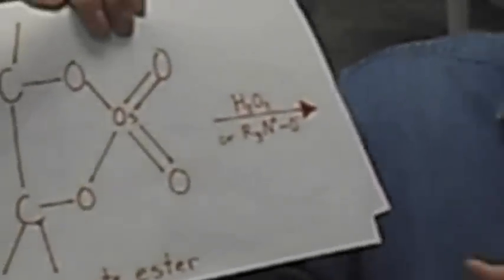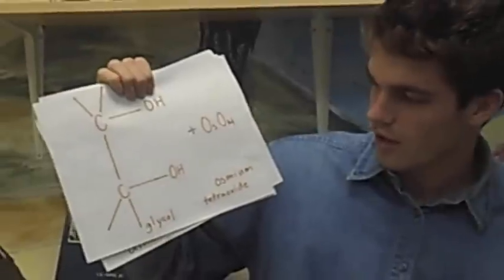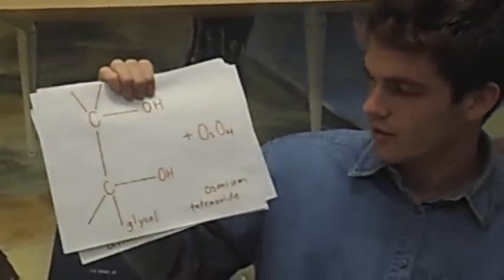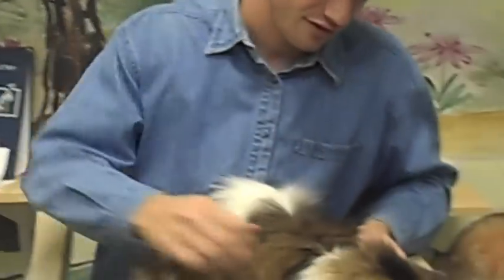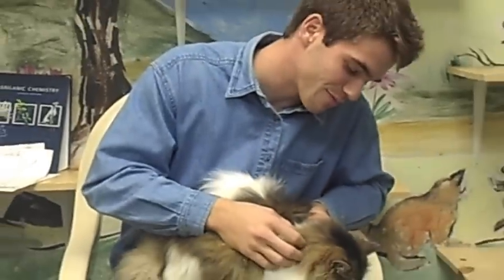Then we can either use hydrogen peroxide or an amine, which will give us a glycol. This glycol is then hydrolyzed with new oxygens, and the osmium tetroxide is regenerated so it can react with other alkenes.